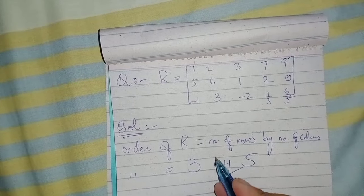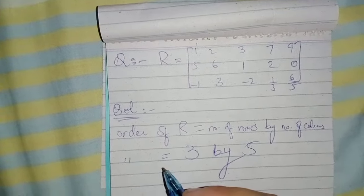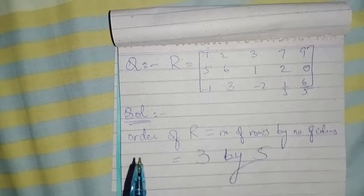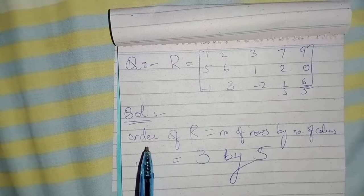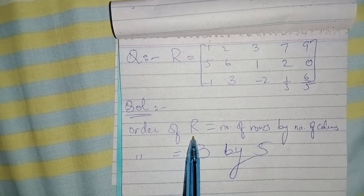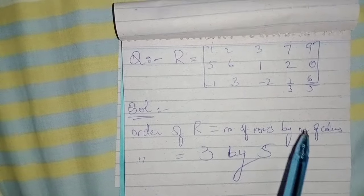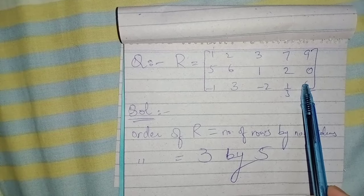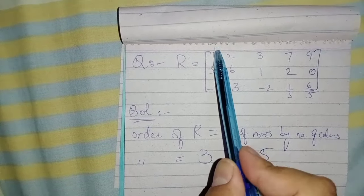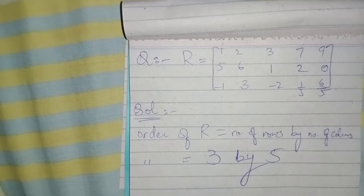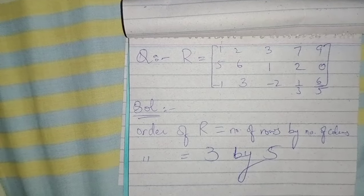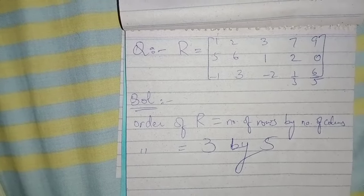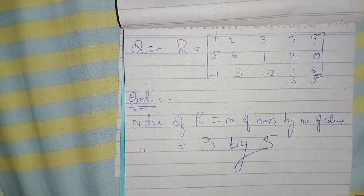Hopefully I have cleared your mind and you now understand the concept of finding the order of any matrix. In each question, first write the formula — number of rows by number of columns — then count the rows and then count the columns. Stay tuned for the next tutorial regarding mathematics. Stay blessed, stay happy, and don't forget to subscribe and press the bell icon for the latest updates.